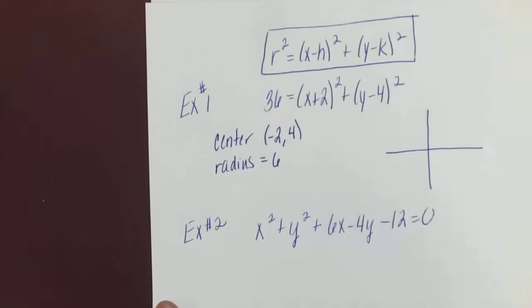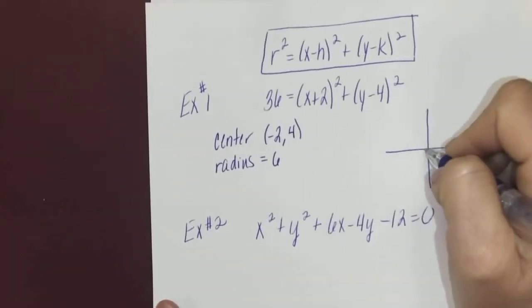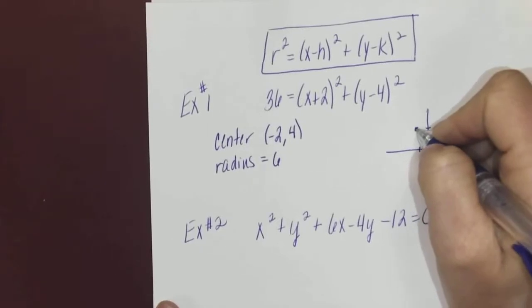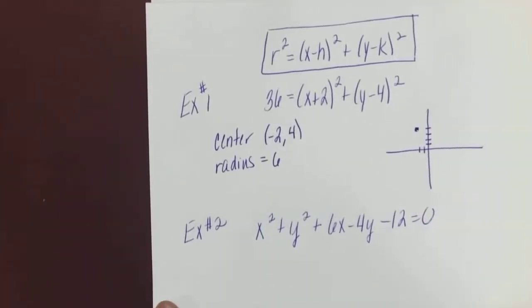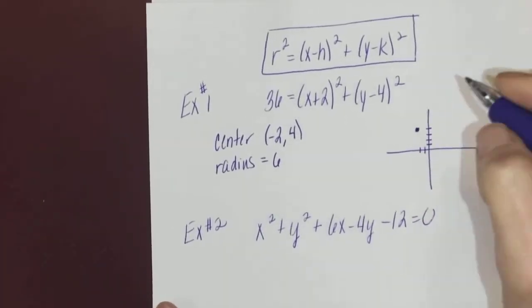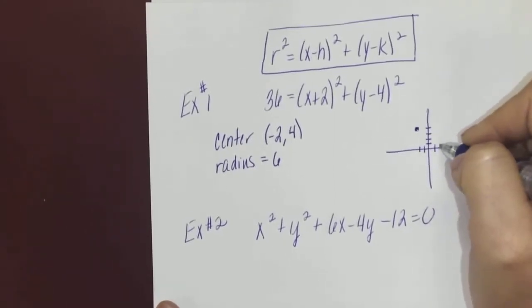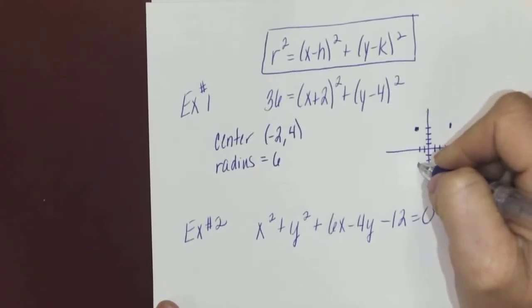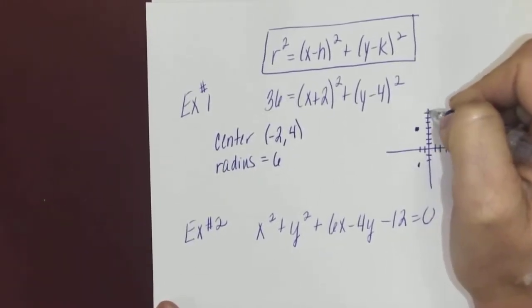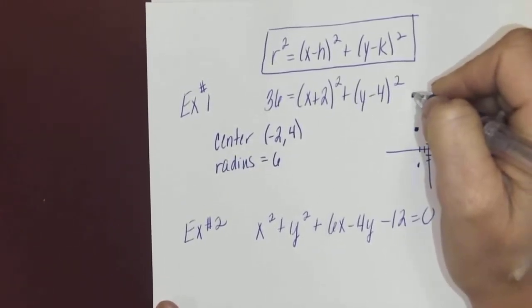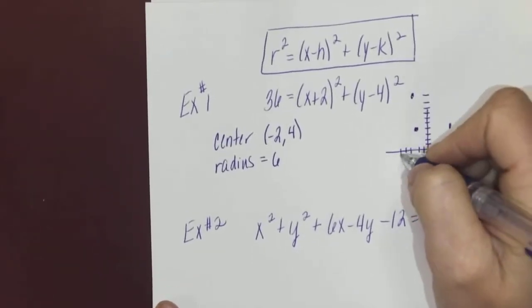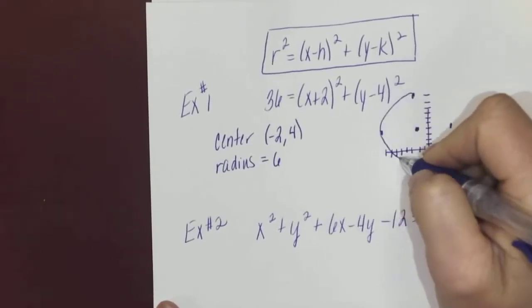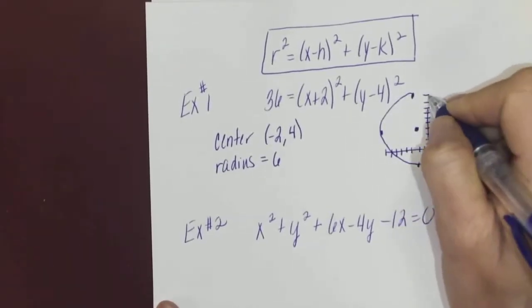If I'm going to graph it, I will plot the point (-2, 4)—2 to the left and 4 up. If my radius is 6, I'll go 6 in all directions. So I'll go 6 to the right, 1-2-3-4-5-6, 6 down, 6 up, 1-2-3-4-5-6—and when I say up, I mean from the center—6 to the left, and then I will roughly sketch in my circle.